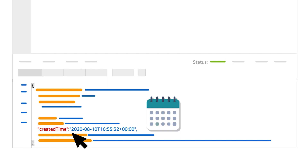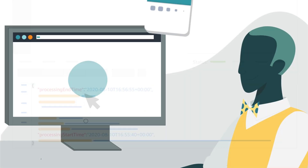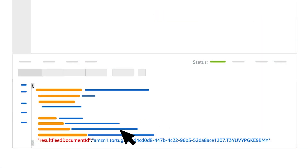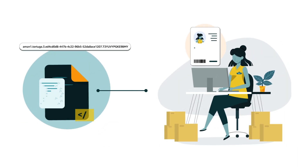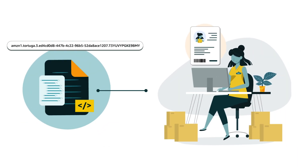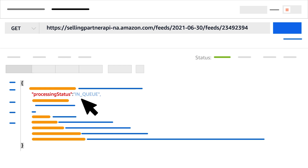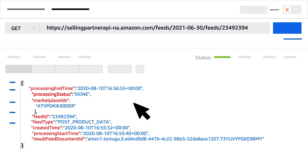Created Time is the date and time the feed was generated in ISO 8601 format. Processing Start and End Time are the dates and times your feed began and ended. Result Feed Document ID is the identifier for the feed document and is unique only in combination with the ID of the seller for whom you are submitting the feed. Processing Status is the current status of your feed — this will be In Queue, In Progress, Canceled, Fatal, or Done.